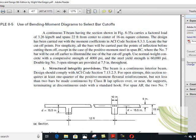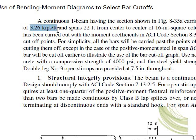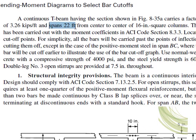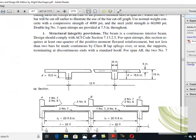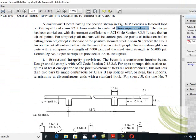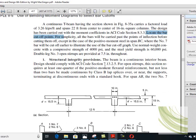We have a continuous T-beam with a section as shown in the figure. There is a factored load, and the span is 22 feet center to center with 16-inch square columns. The design has been carried out using the ACI moment coefficients. The design of cut-up points will be carried out on the basis of those moment coefficients.